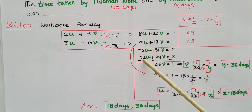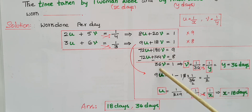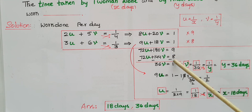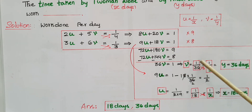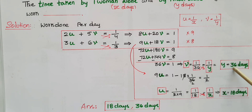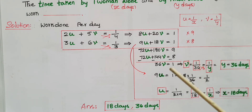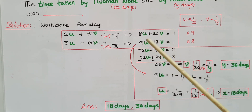72u minus 72u equals zero. 180v minus 144v gives 36v equals nine minus eight, which is one. So v equals one-by-36. Since v equals one-by-y, we have one-by-y equals one-by-36, therefore y equals 36 days.